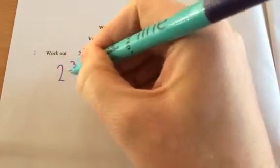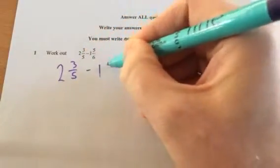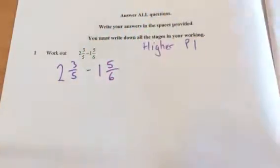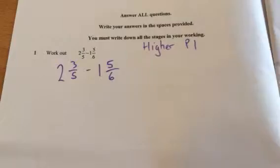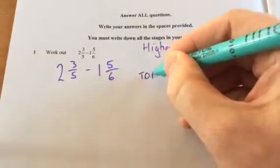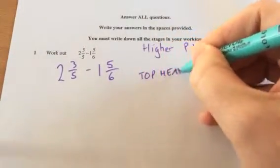We've got 2 and 3 fifths minus 1 and 5 sixths. The first thing to do is change the mixed fractions to top heavy.